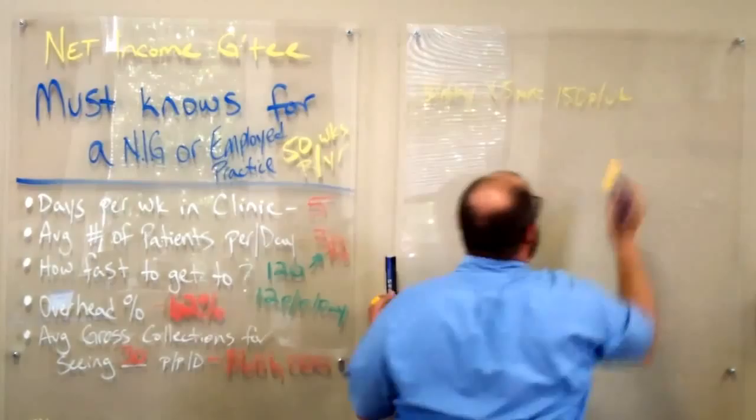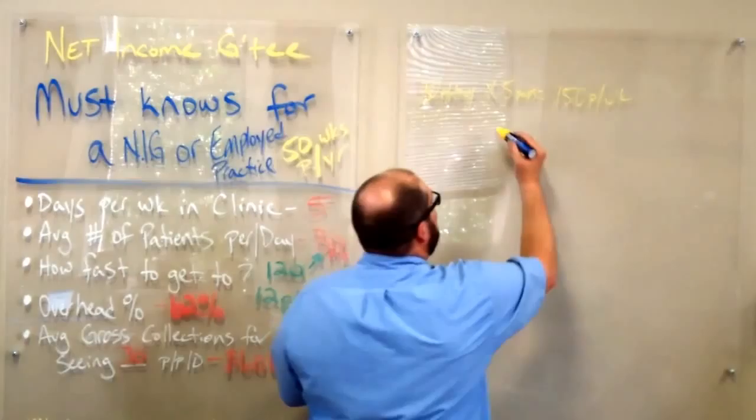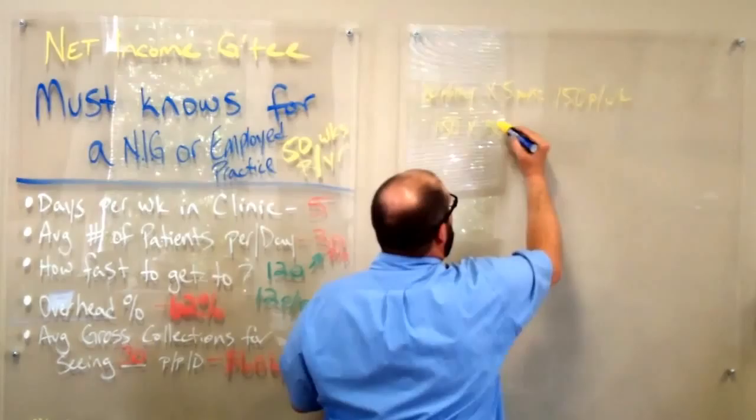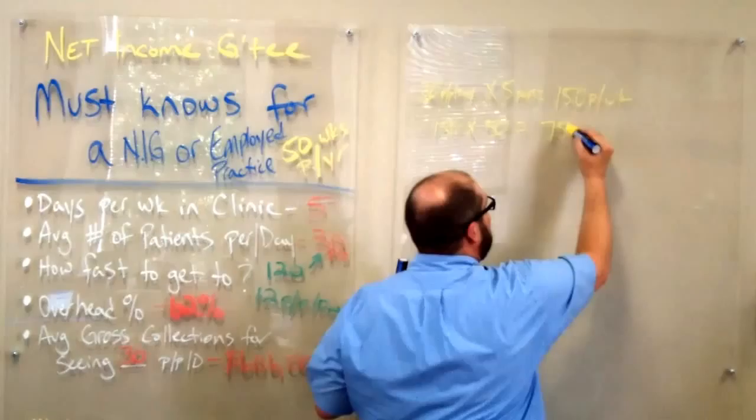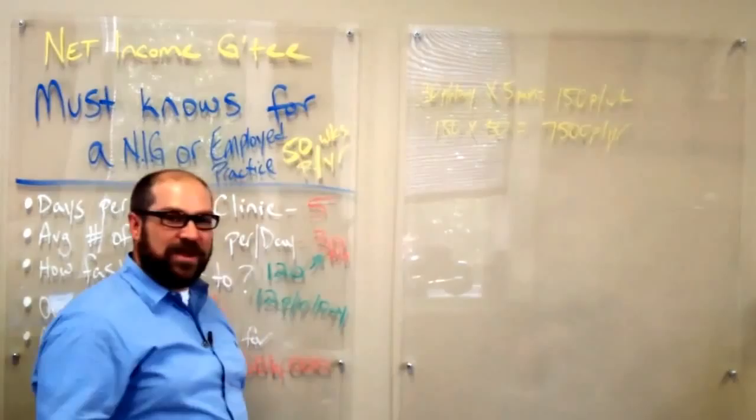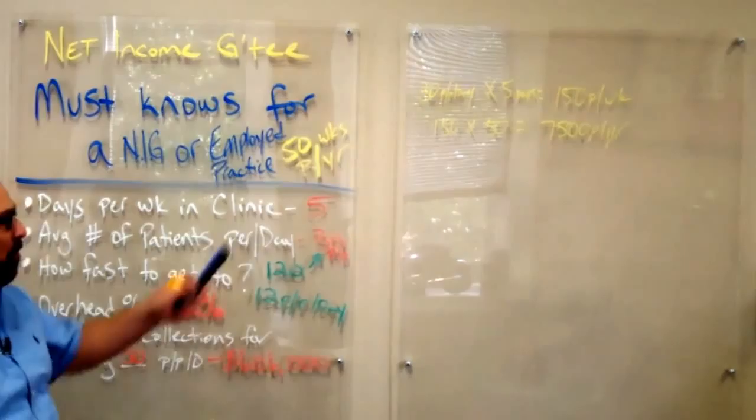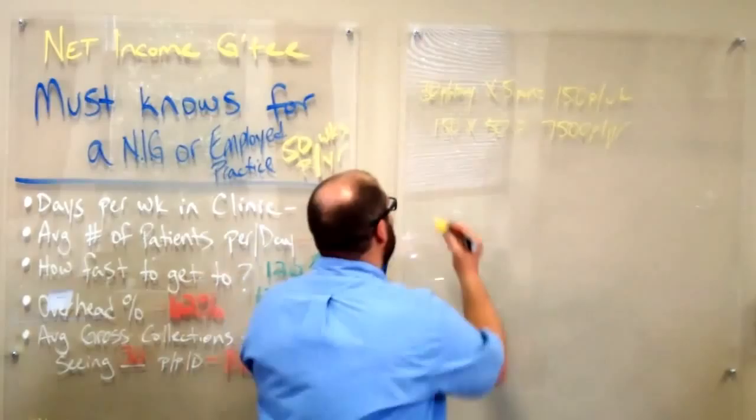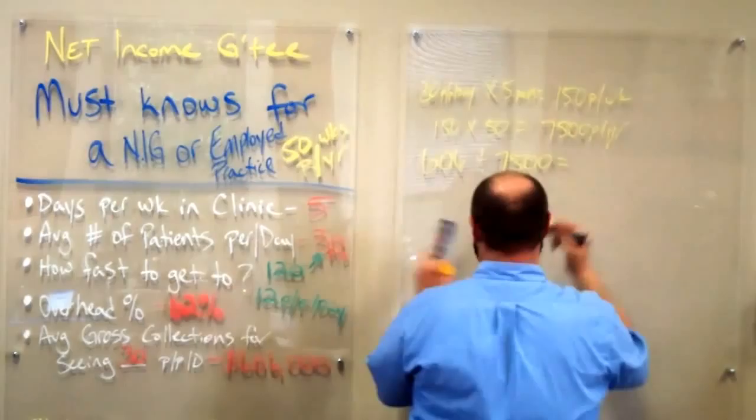We're going to take 30 patients per day, multiply it by five days. So that's 150 patients per week. That's 150 times 50, which is 7,500 patients per year. So if we see 30 patients per day working five days a week for 50 weeks a year, we're going to see 7,500 patients per year.